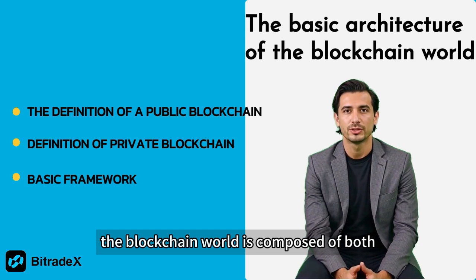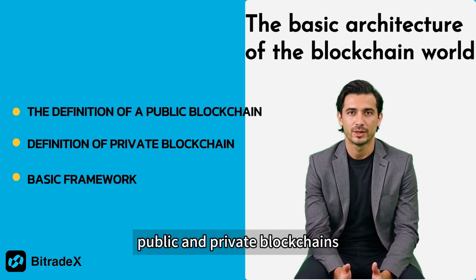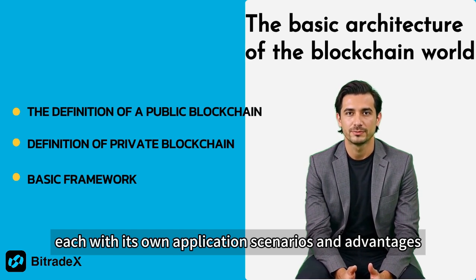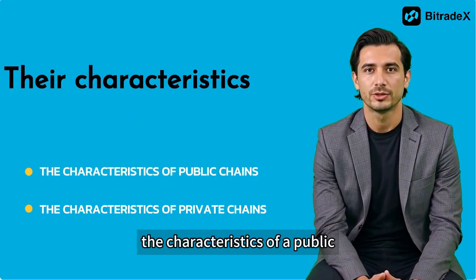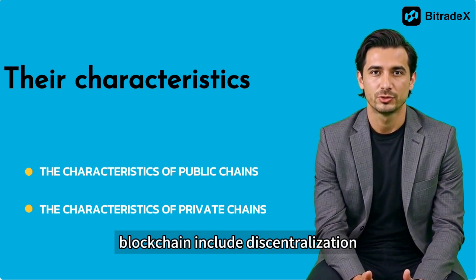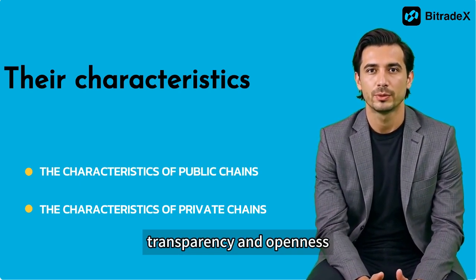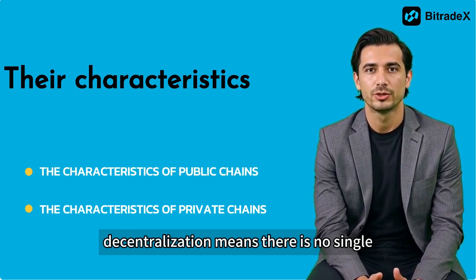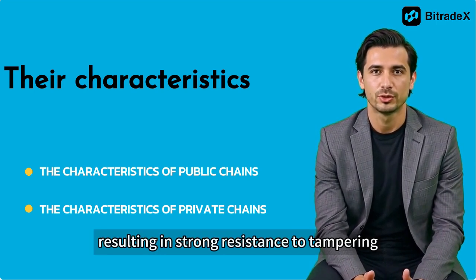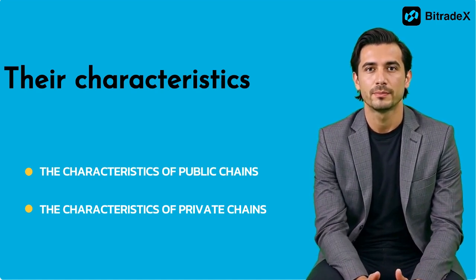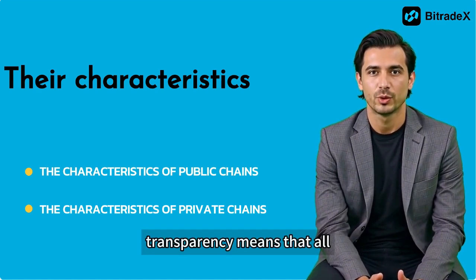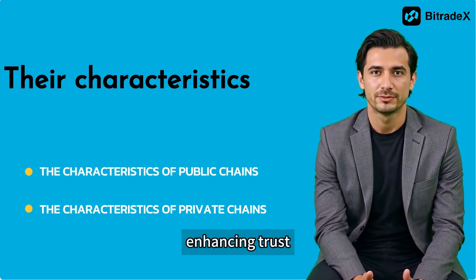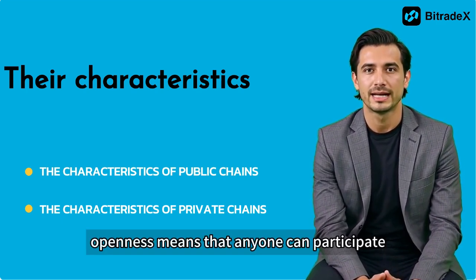The blockchain world is composed of both public and private blockchains, each with its own application scenarios and advantages. The characteristics of a public blockchain include decentralization, transparency, and openness. Decentralization means there is no single control center, resulting in strong resistance to tampering. Transparency means that all transaction records are publicly accessible, enhancing trust.